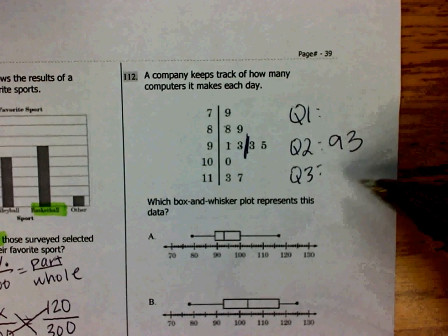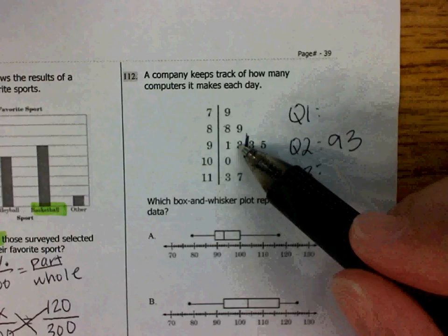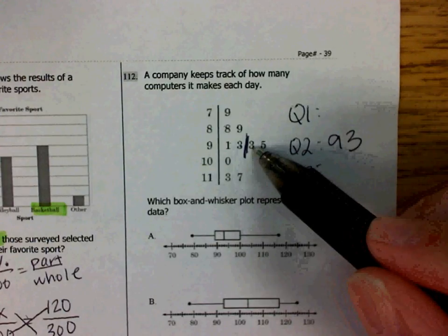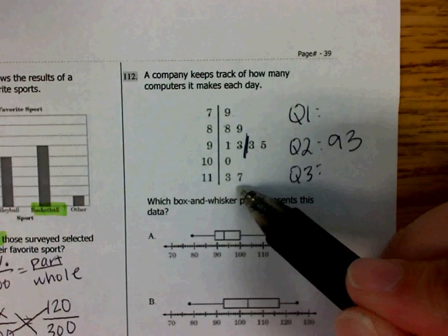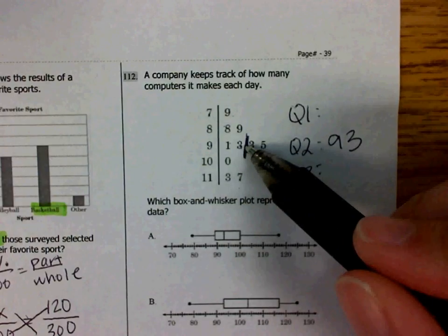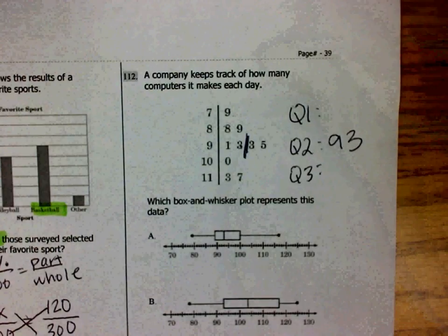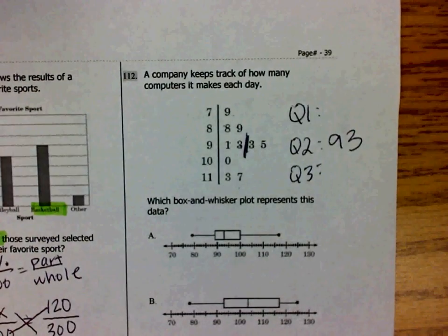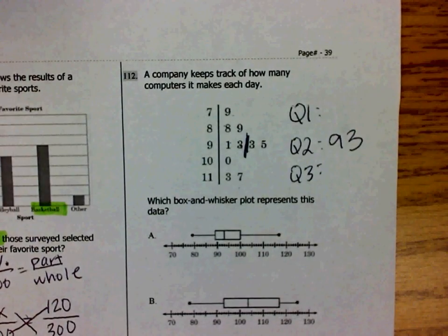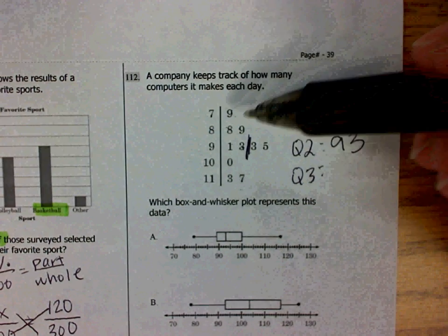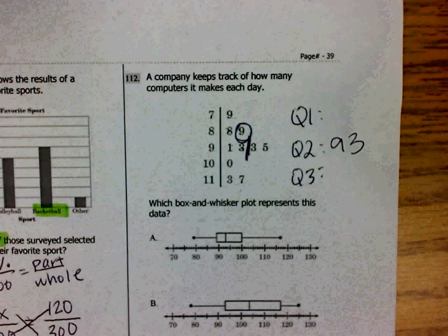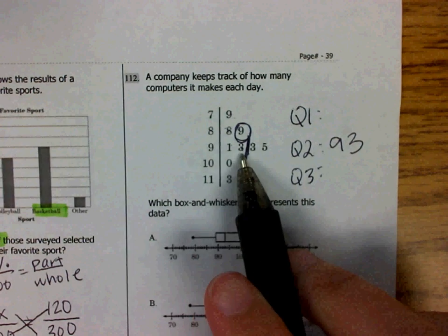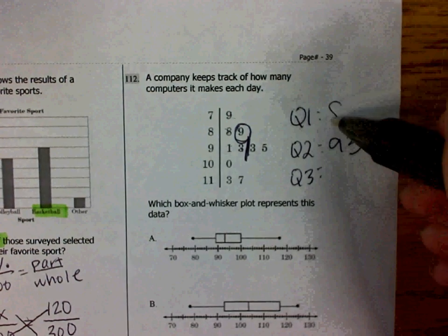When you find quartile 1, you must include both of these 93s in your lower half of the data and your upper half of the data, because the median is between the two 93s. So there are five data values in between them. Five is an odd number, so I know there's going to be a middle. So I'm going to count two. That's my middle value, because there's two numbers after it. So quartile 1 is 89.